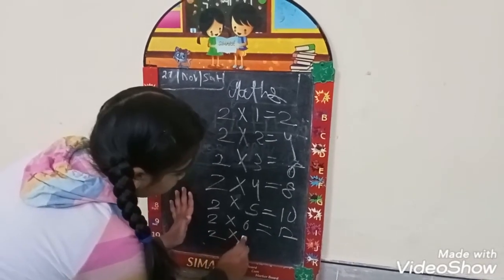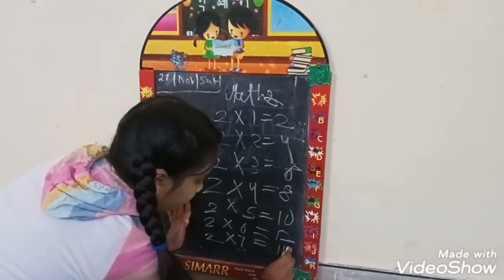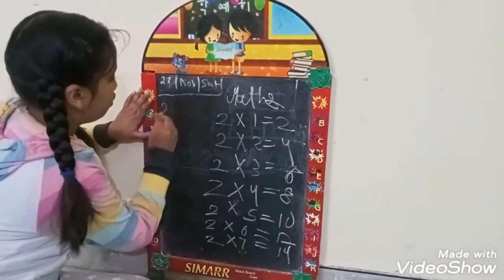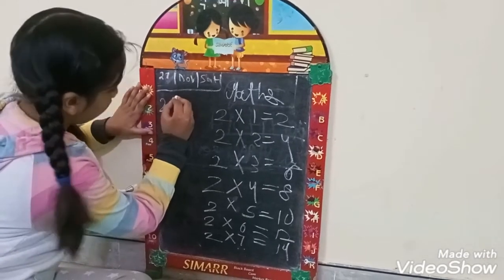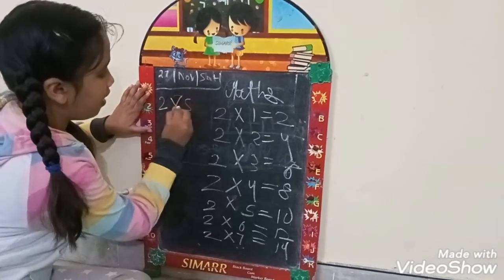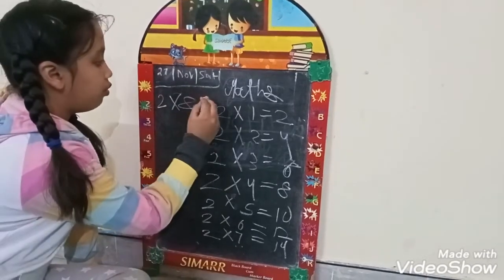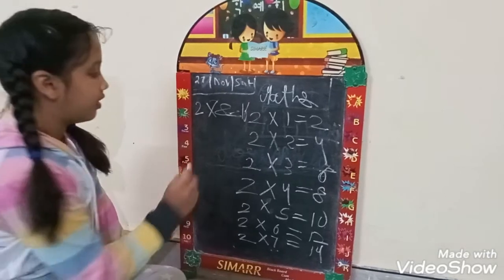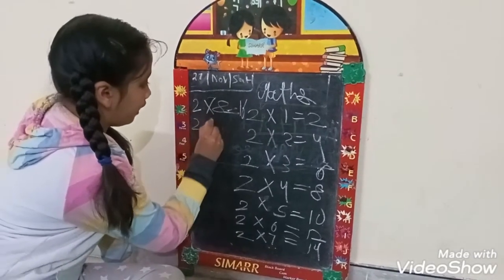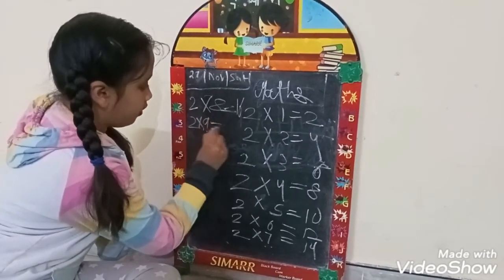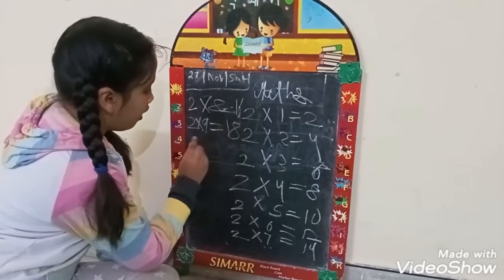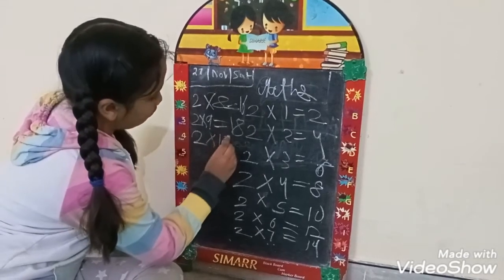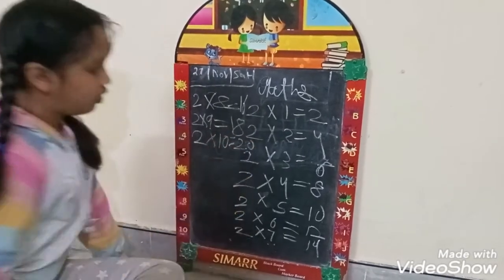Two sevens are fourteen. Two sevens are fourteen. Two eights are sixteen. Two eights are sixteen. Two nines are eighteen. Two tens are twenty. Two tens are twenty.